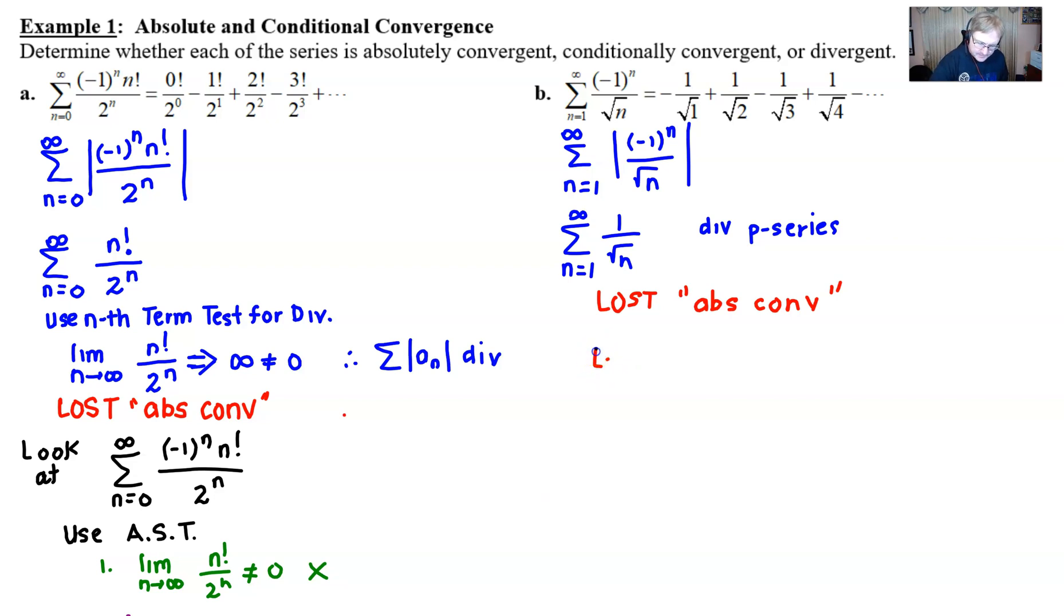We're going to look at the original problem, the negative one to the n over square root of n. And we're going to ask ourselves, how are we figuring out how does that behave without the absolute values? What kind of test would we use on an alternating series? The alternating series test. So we're going to use it again, which means that we're going to break out our first criteria. Number one is the limit as n approaches infinity of the non-alternating piece, which is only the one over the square root of n. Is that equal to zero? And I hope that you all come to the conclusion that it certainly is. So far we're in the game for conditional convergence.